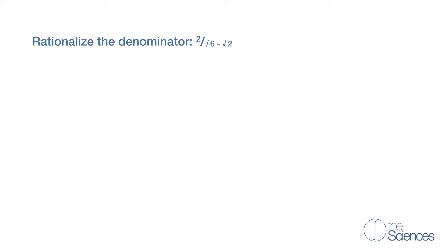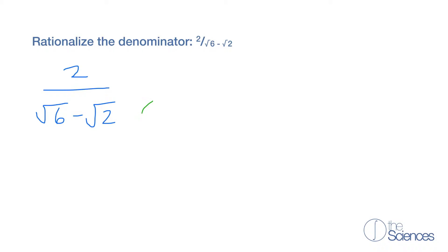Rationalize the denominator: 2 over the square root of 6 minus the square root of 2. To eliminate our square roots in the denominator, we're going to multiply the denominator by its conjugate.